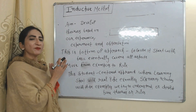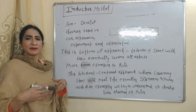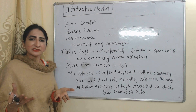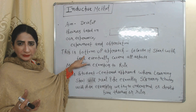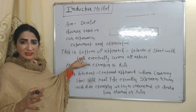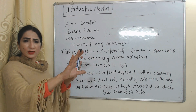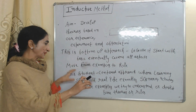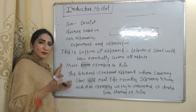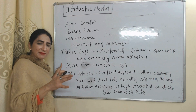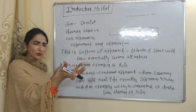The aim of the inductive method is to develop a theory based on our experiments, experiences, and observations. This is a bottom-up approach, meaning we start with the basics and eventually cover all aspects. Here we move from example to rules — we first understand examples and with the help of these examples we try to develop theories or rules.